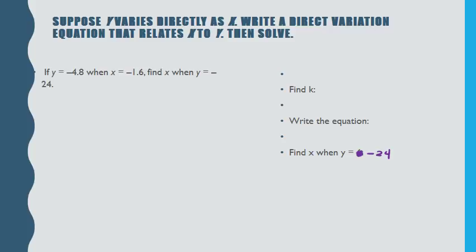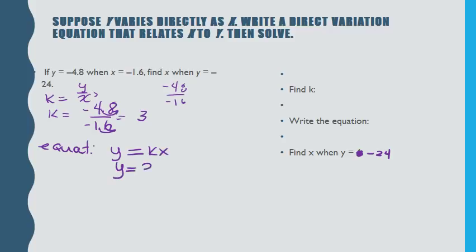So just another example. The first thing we do is find k. So remember, k equals y over x. So in this case, k is negative 4.8 over negative 1.6, which is positive 3. One of the easier things to do if you don't have a calculator is we can move this decimal over, so it's actually negative 48 over negative 16, which is 3. So there's our k. Our equation is y equals kx. k is 3, so y equals 3x. So if I'm going to find x when y is negative 24, I'm just going to substitute in negative 24 equals 3x. If I divide by 3, x equals negative 8.